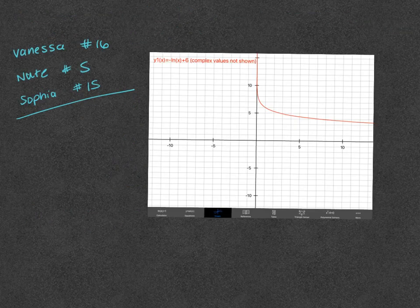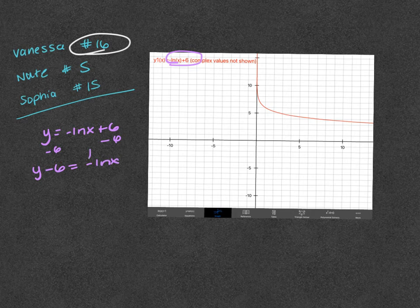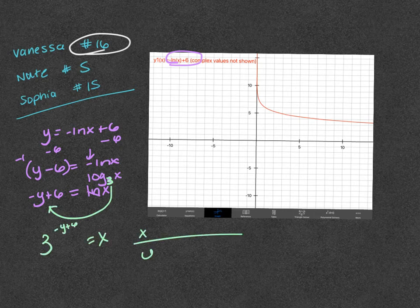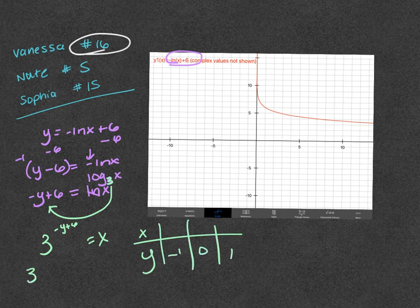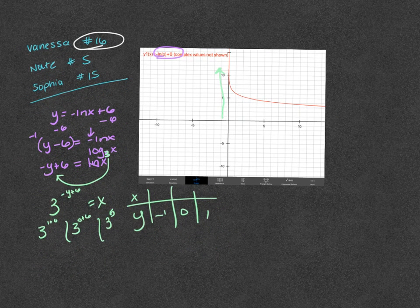For Vanessa's number 16 — y equals negative ln of x plus 6 — first move the 6: y minus 6 equals negative ln of x. Multiply by negative one: negative y plus 6 equals ln of x. Ln becomes log base e of x, approximated as log base 3. Then 3 to the (negative y plus 6) equals x. Plugging in y values: 3 to the (negative negative one plus 6), 3 to the (0 plus 6), and 3 to the (negative 1 plus 6) — these are all going to be huge numbers.